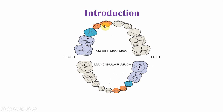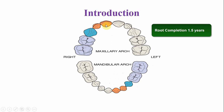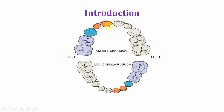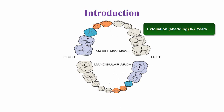These teeth emerge into the oral cavity at around 10 months of age, and root completion is around one and a half years. These teeth function for about five years, meaning they are exfoliated and replaced by the permanent central incisors around the age of seven years.